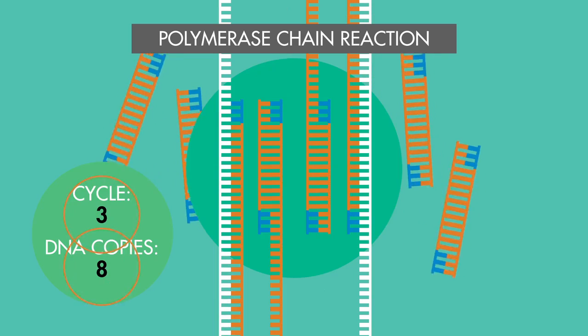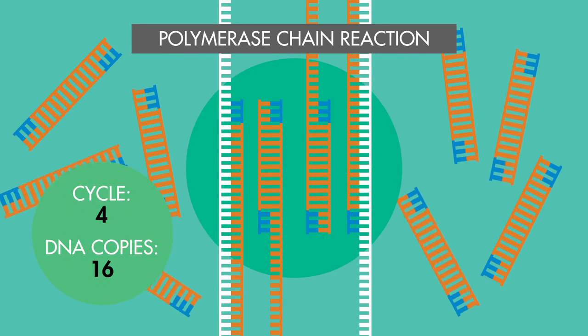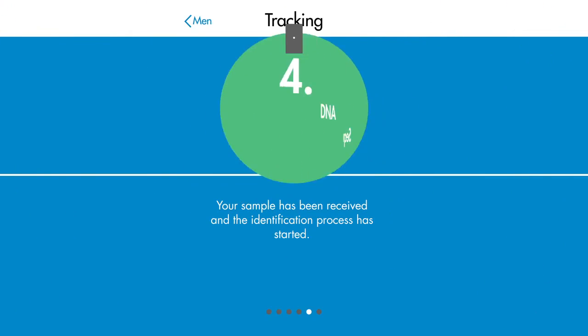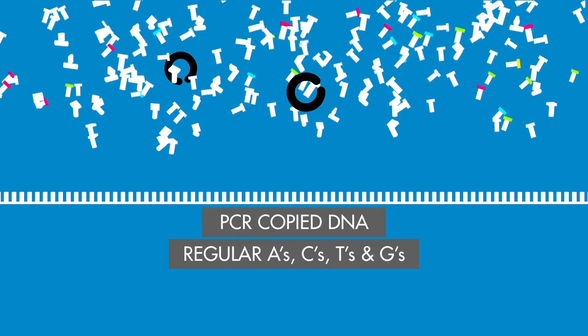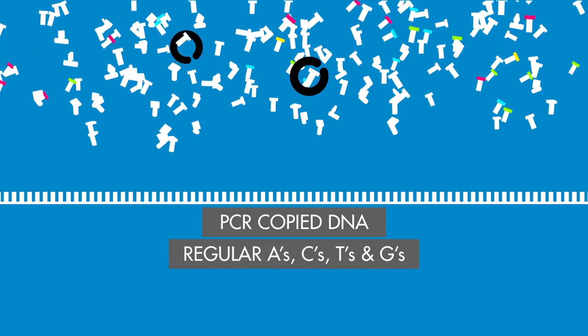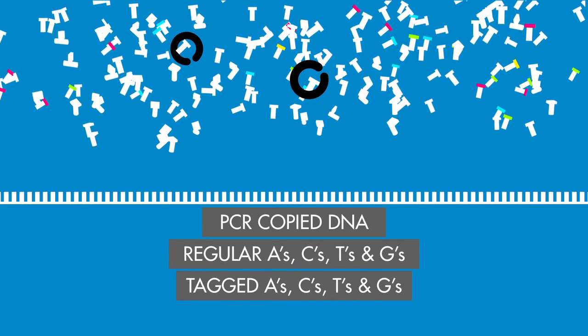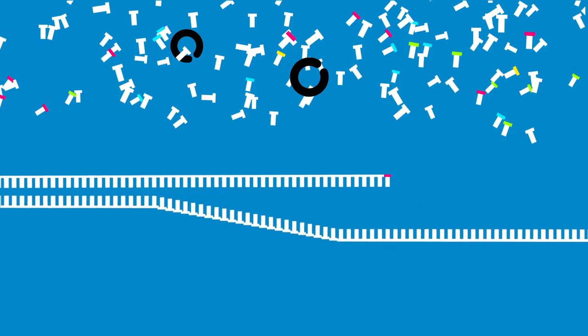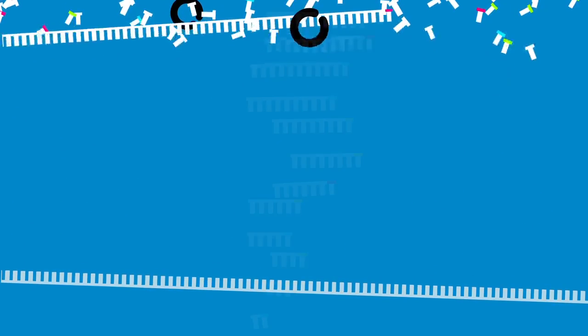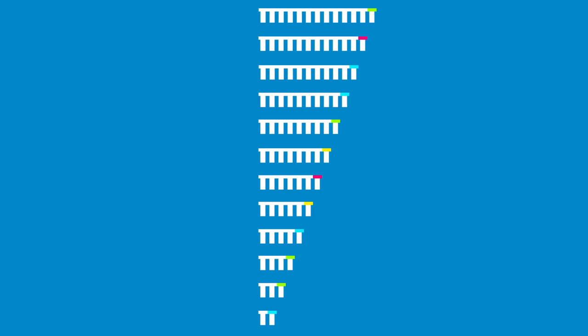This gives us sufficient genetic material to use in the next step: DNA sequencing. To prepare the DNA for sequencing, we create a mixture of the PCR copied DNA, regular A's, C's, T's, and G's, and special fluorescently tagged A's, C's, T's, and G's. DNA polymerase replicates the input DNA with regular nucleotides and incorporates fluorescent nucleotides at random positions, creating DNA fragments of different sizes and ending at every possible position in the target segment.